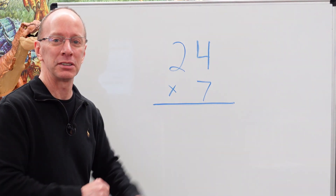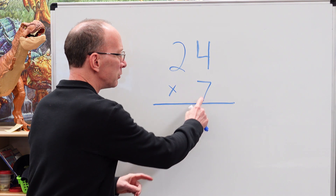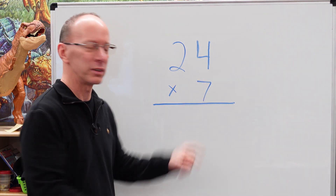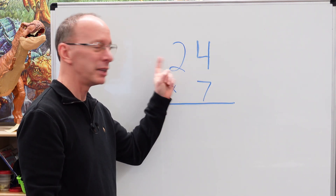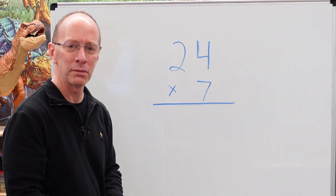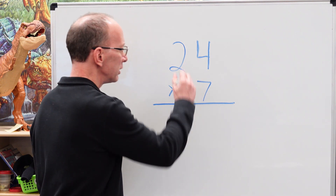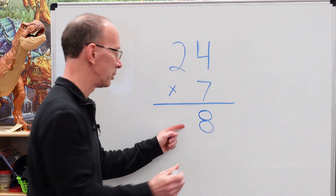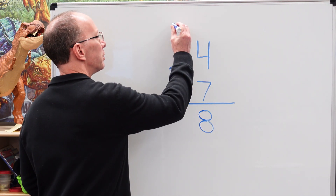24 times 7. When we do a problem like that, we're going to be working with the ones first. So we're going to go 7 times 4 — this is the direction we're going to be multiplying in. 7 times 4 is 28. You put the 8 down, and you take that 2 and put it right up on top here.